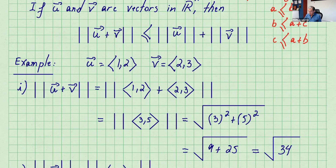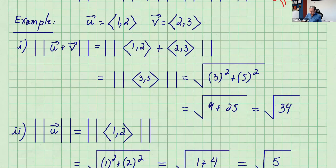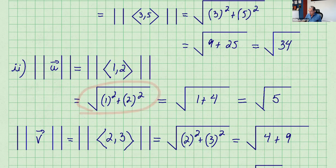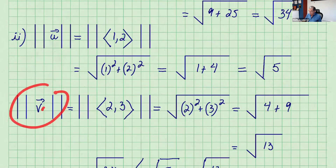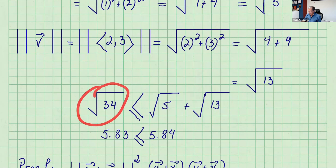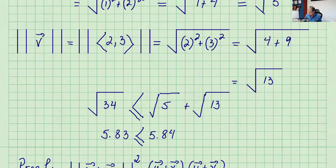Norm of u plus v is just the norm of the sum of these two vectors. So it's going to be norm of the vector (3, 5). Using the formula, you get square root of 3² plus 5², that's 25 plus 9, which is square root of 34. Norm of u — calculating separately — using the formula gives square root of 5. Norm of v using its components gives square root of 4 plus 9, which is square root of 13. Let's check: norm of u plus v was square root of 34. Is that less than or equal to square root of 5 plus square root of 13? Using a calculator, the left side gives 5.83 and the right side gives 5.84. So it checks.